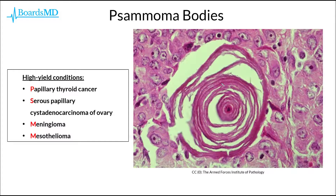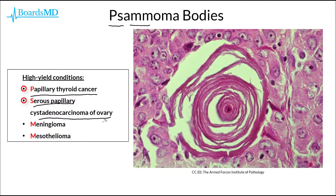Psammoma bodies are found in several high-yield conditions that love to show up on board examinations, and these can be remembered by the mnemonic PSMM, as these letters appear quite literally in the word psammoma bodies. These high-yield conditions include papillary carcinoma of the thyroid, serous papillary cystadencarcinoma of the ovary, meningioma, as well as mesothelioma.